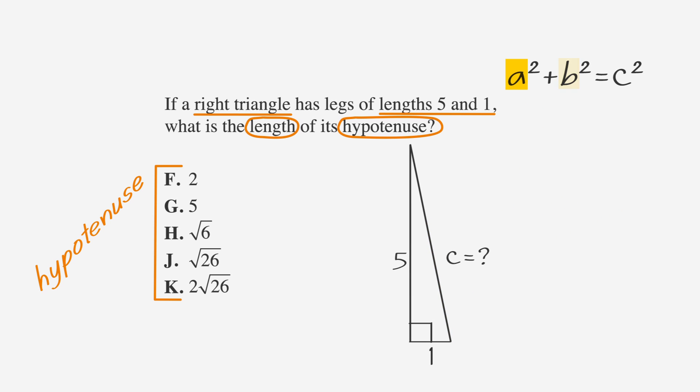Plug 5 in for A and 1 in for B. We get 5 squared plus 1 squared equals C squared. So 25 plus 1 equals C squared, or 26 equals C squared. Taking the square root of both sides, we get the square root of 26 equals C, which is choice J.